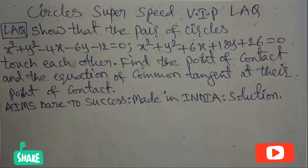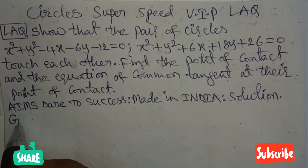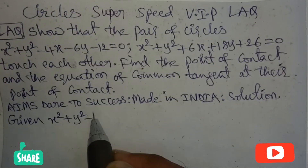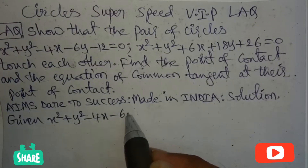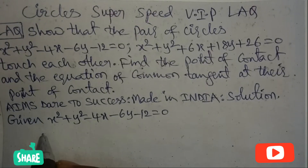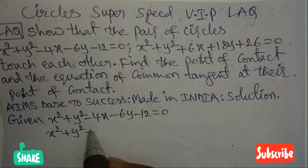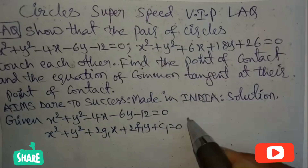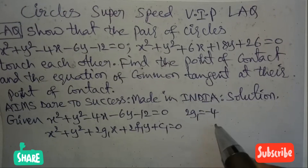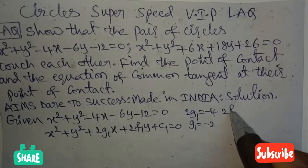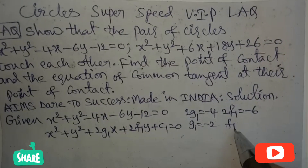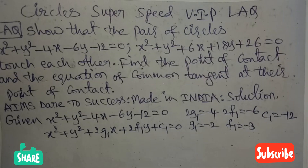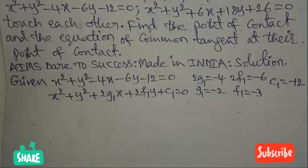Solution: here we can find three values — first, touch each other; second, point of contact; third, equation of common tangent. Given: x² + y² - 4x - 6y - 12 = 0. This looks like x² + y² + 2g₁x + 2f₁y + c₁ = 0. Comparing x-coefficients: 2g₁ = -4, so g₁ = -2. Comparing y-coefficients: 2f₁ = -6, so f₁ = -3. Constant term: c₁ = -12.